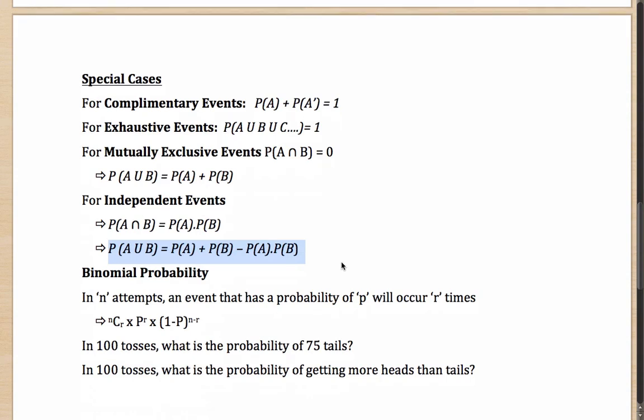Another concept is binomial probability. Imagine you are tossing a coin a hundred times. Is it possible that all hundred are heads? It is highly unlikely, but possible. The probability of getting all hundred heads: first head is half, second head is half, and so on — all these are independent events. So it will simply be half multiplied by itself a hundred times, which is half to the power of hundred.